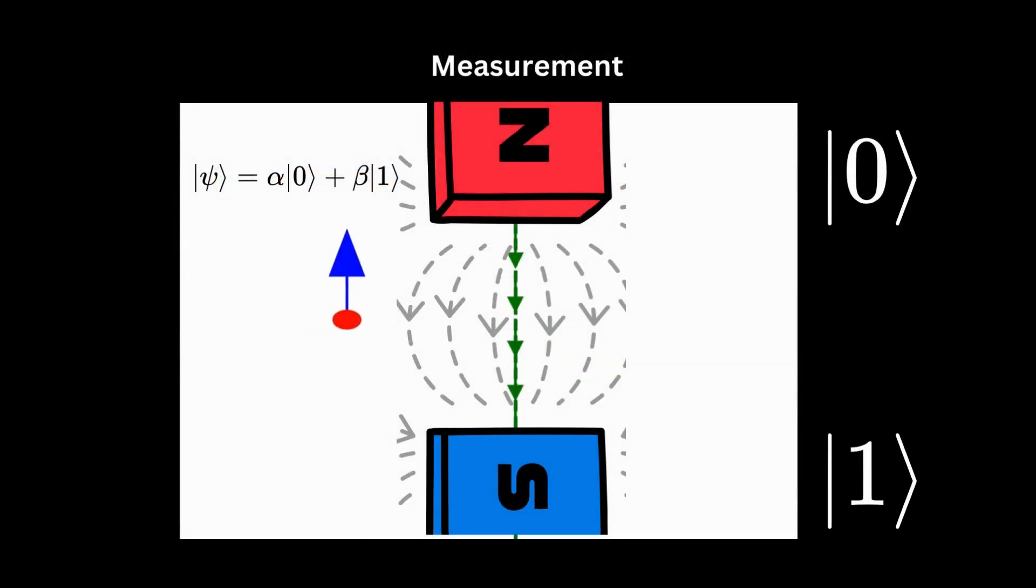The Stern-Gerlach experiment is a pivotal example of quantum measurement. In this experiment, neutral silver atoms are emitted from a furnace. Each atom has two possible discrete angular momenta or spin, existing in the superposition of two primary states, up or down. This setup demonstrates the simultaneous multi-state existence of quantum particles, a fundamental aspect of quantum mechanics.